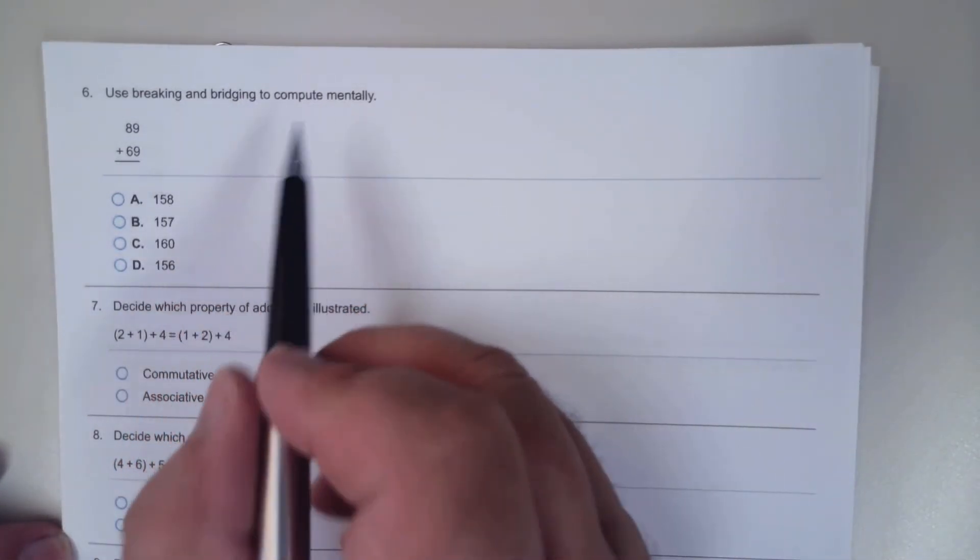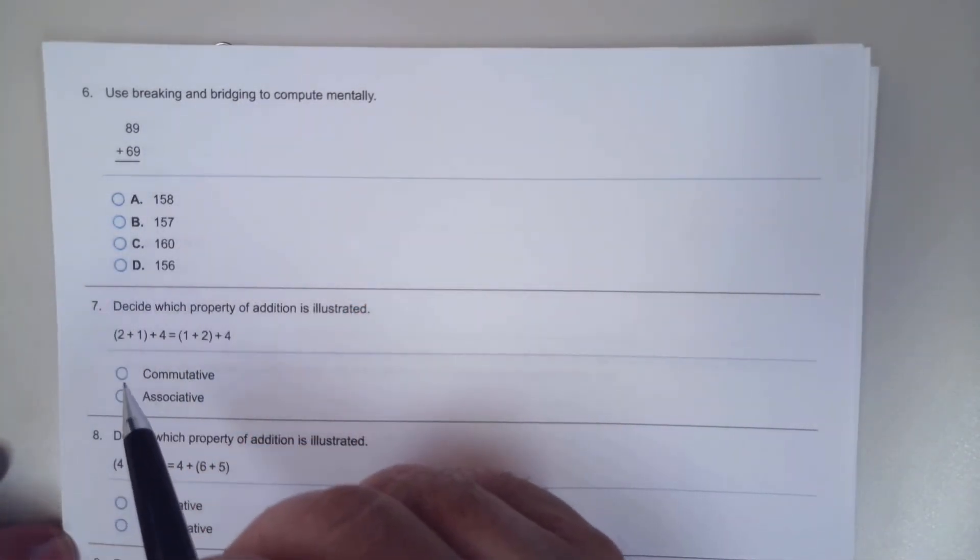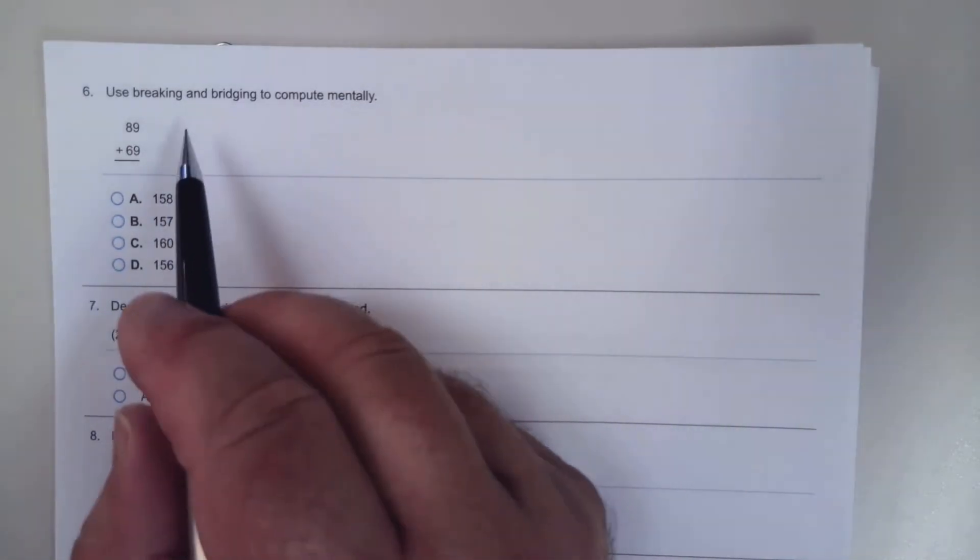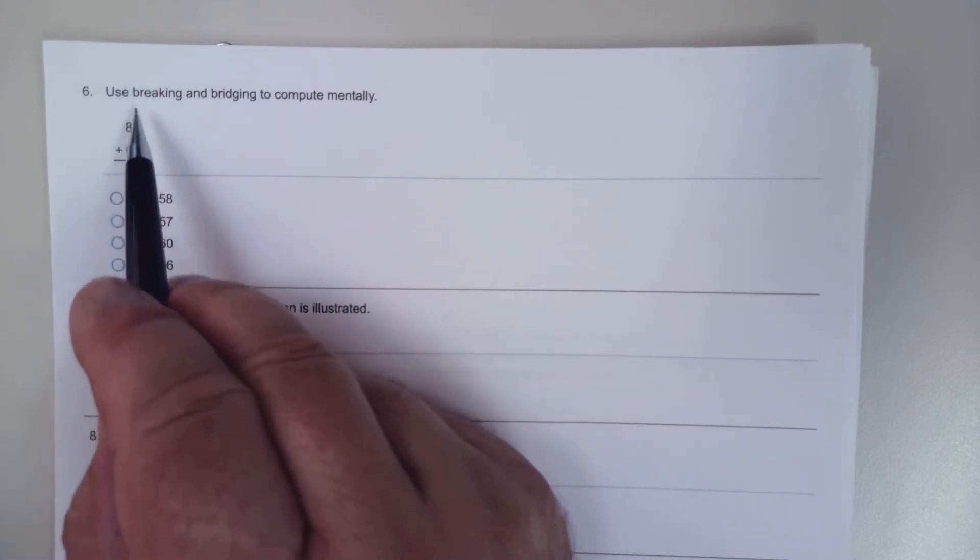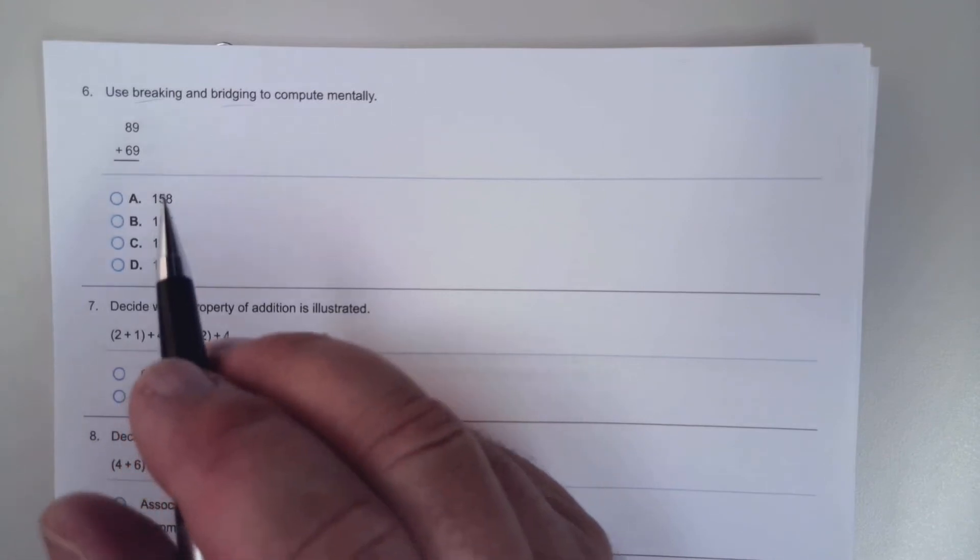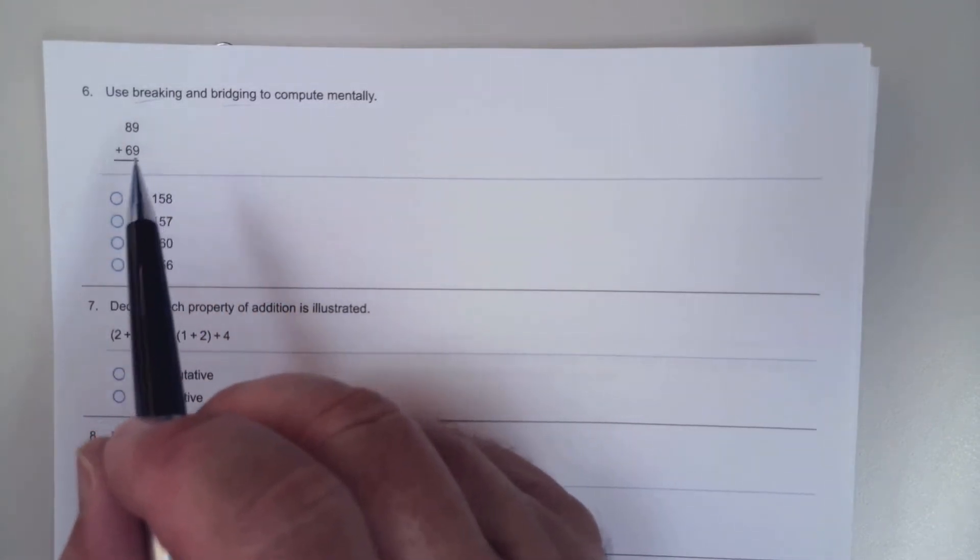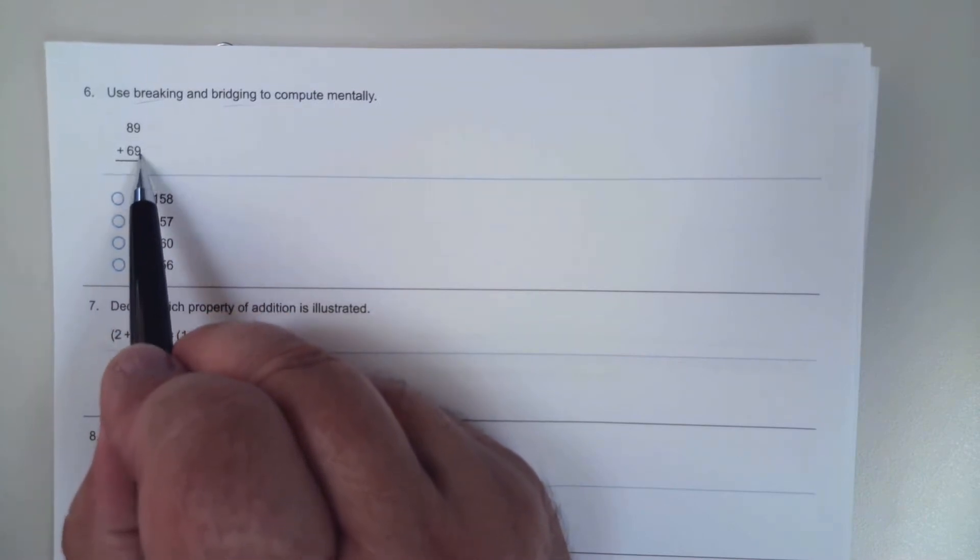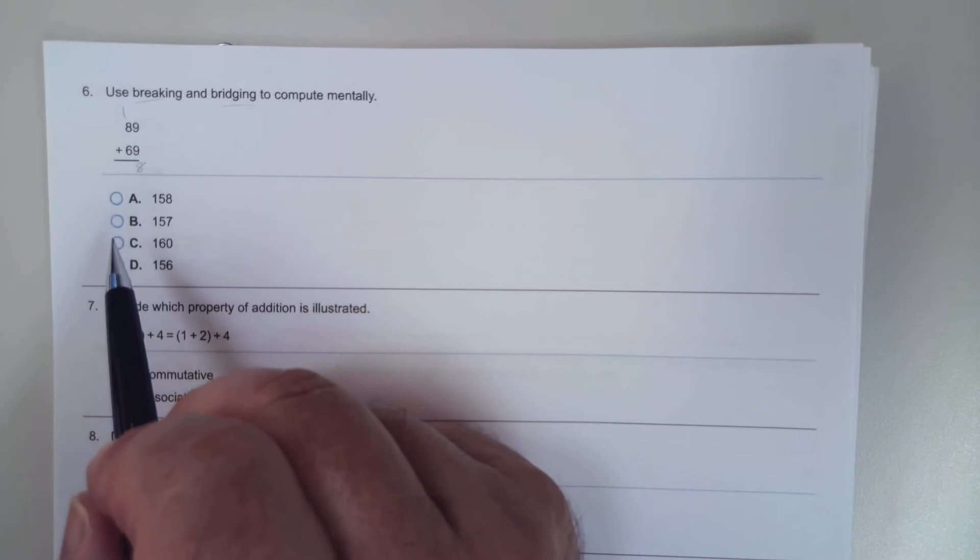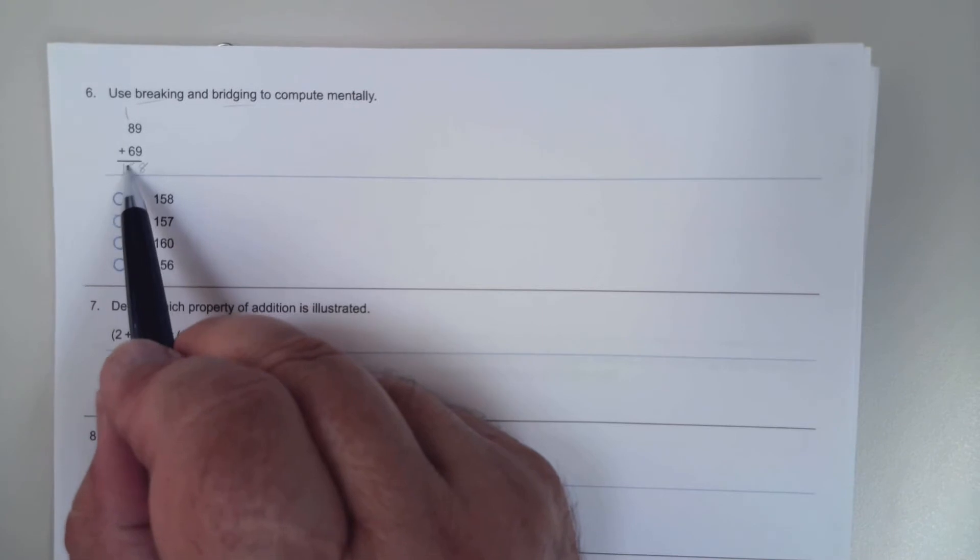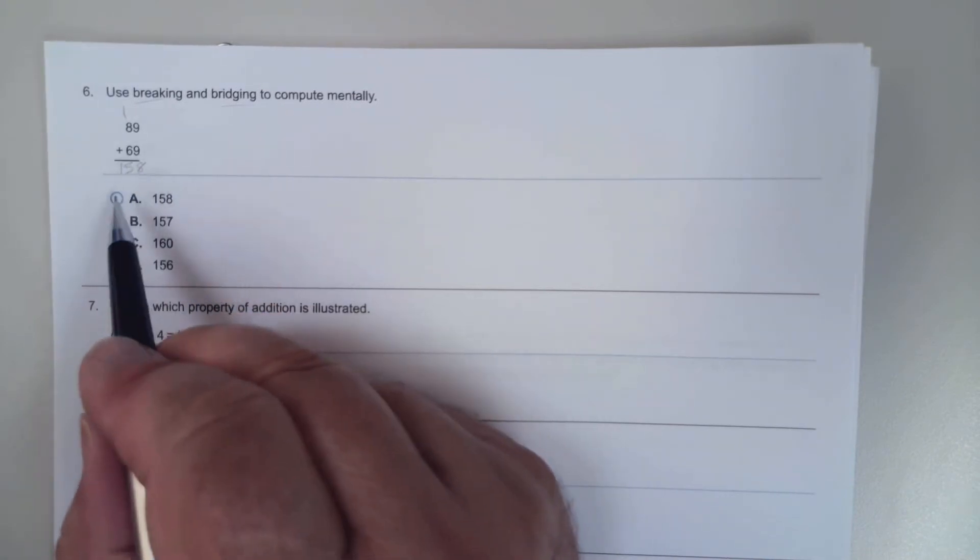Use breaking or bridging to compute mentally. Actually I should have checked that out, I don't know what breaking or bridging is, I've never heard those terms before, but let me show you how you work this out. 9 plus 9 is 18, carry the 1, 8 plus 1 is 9 plus 6 is 15, so 158.